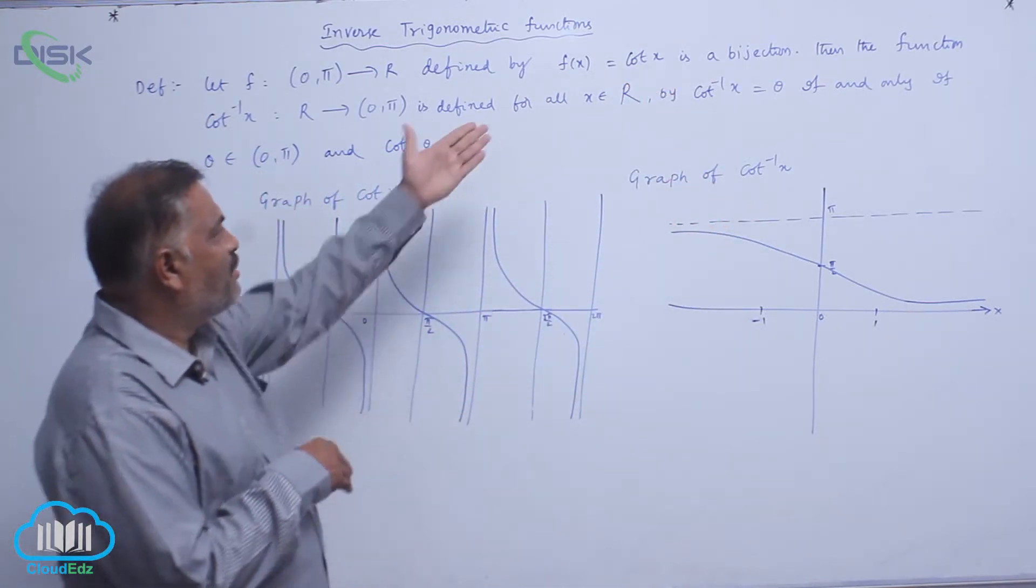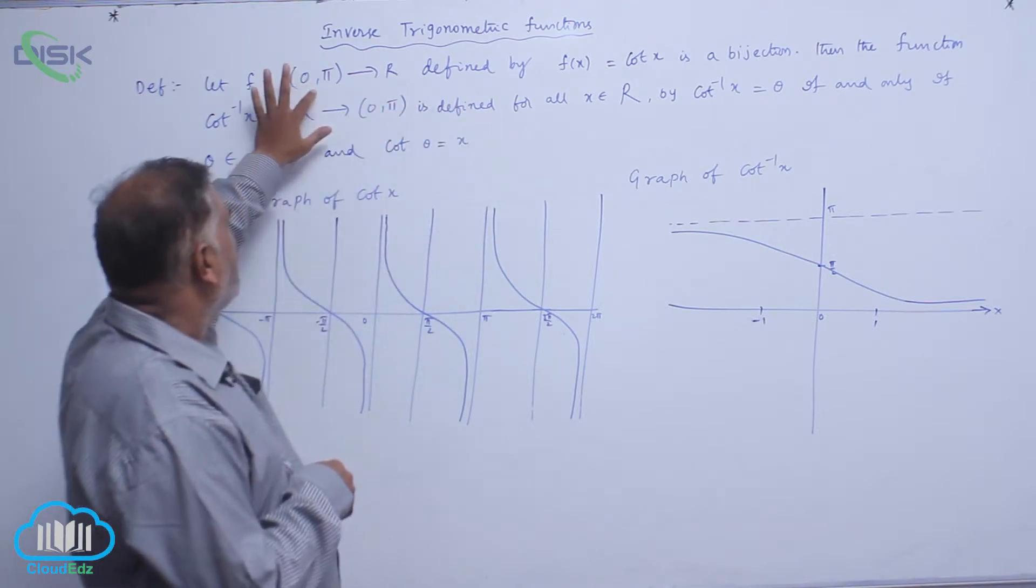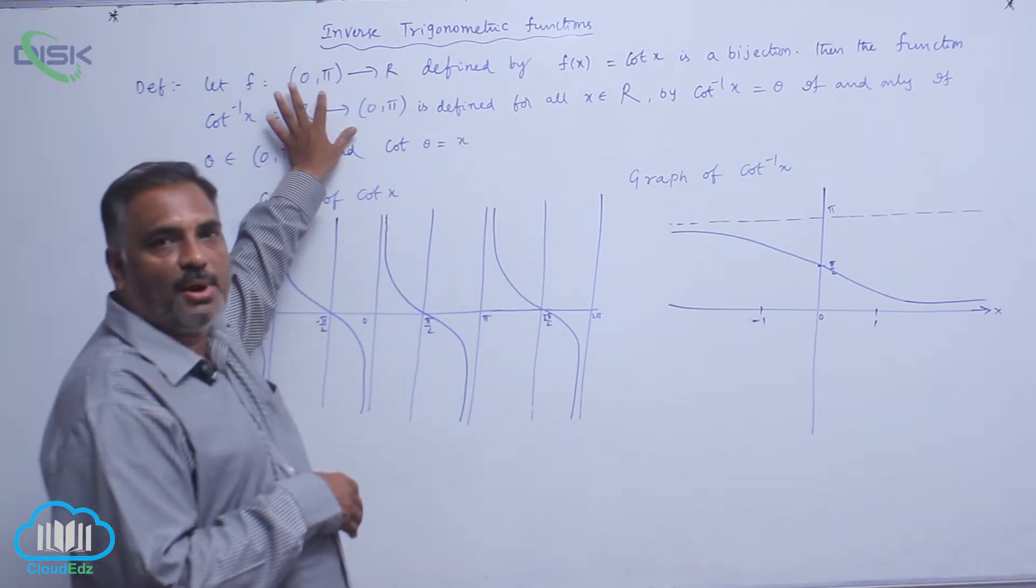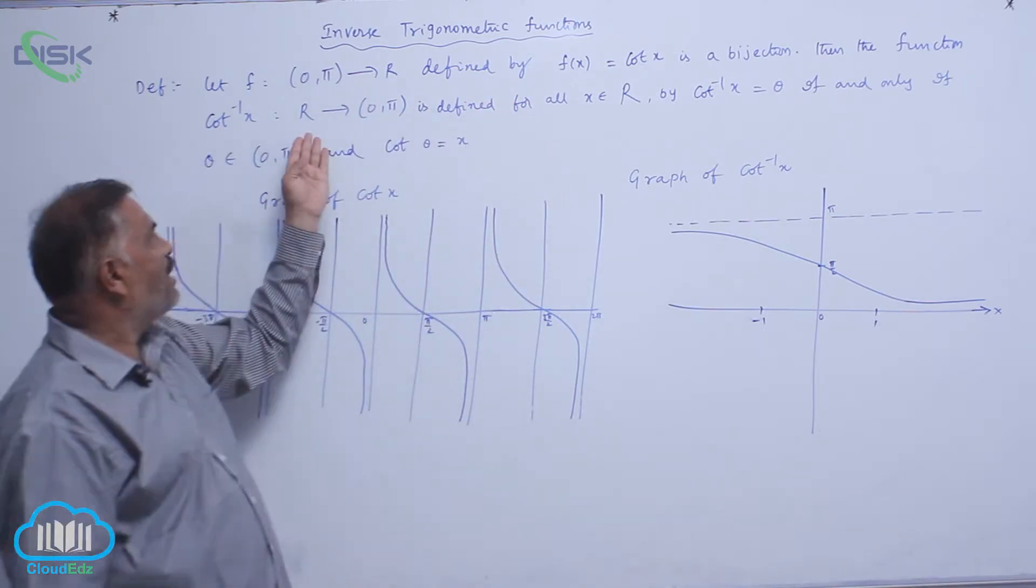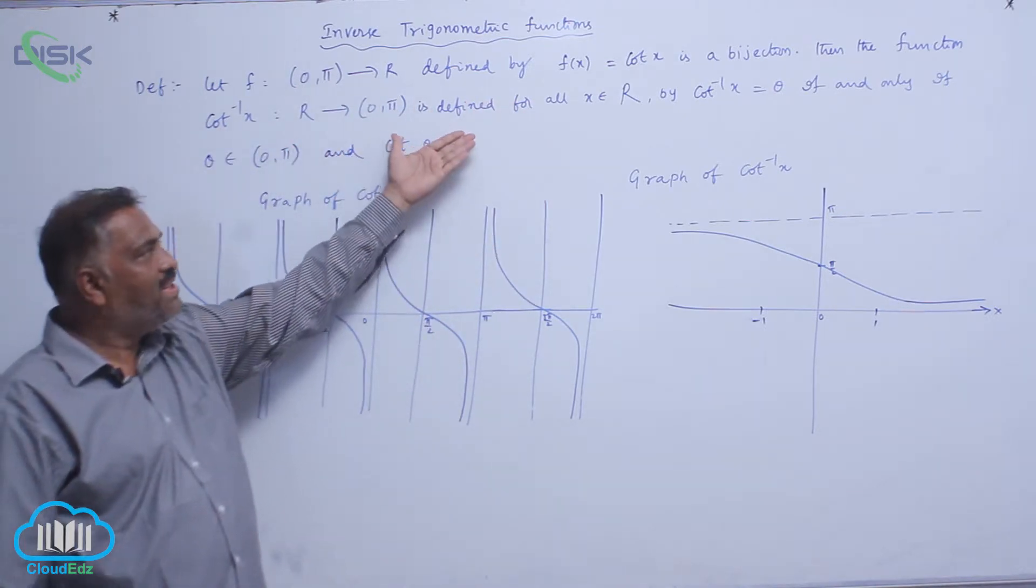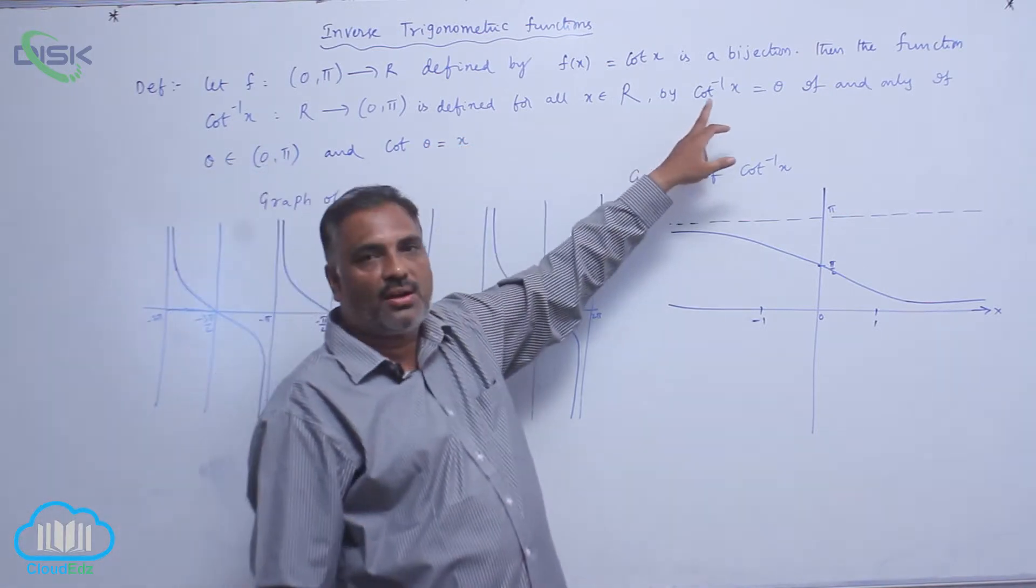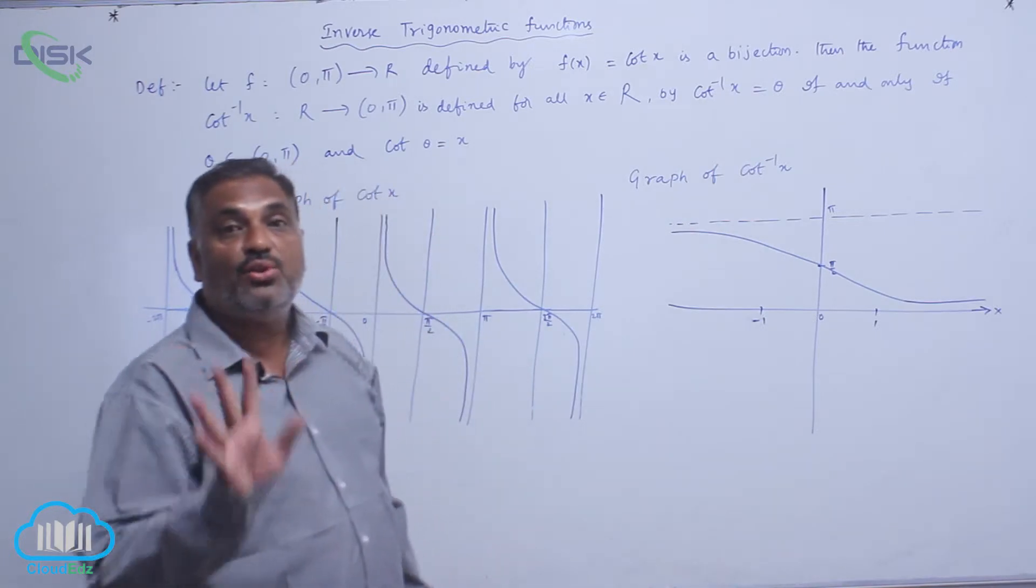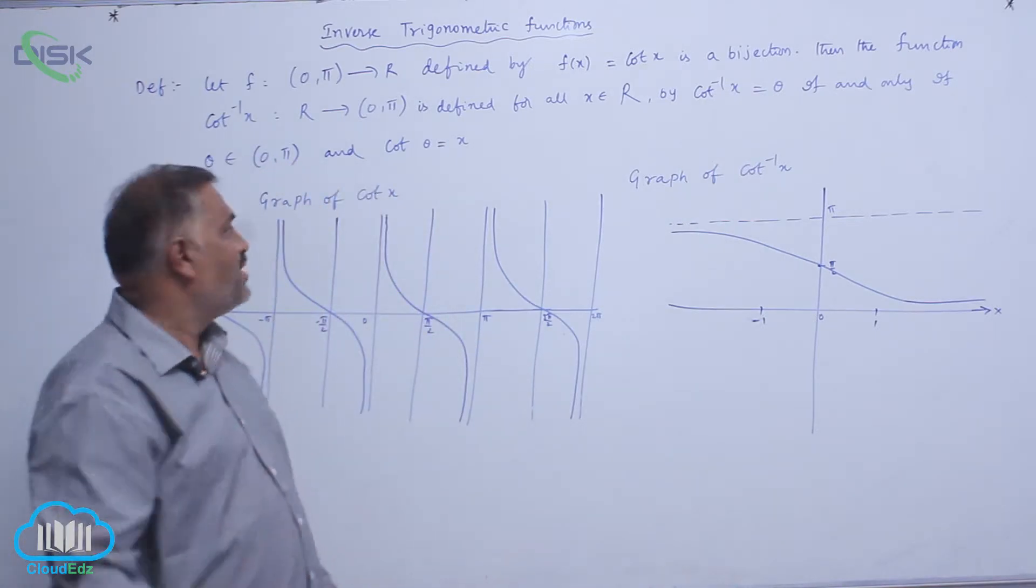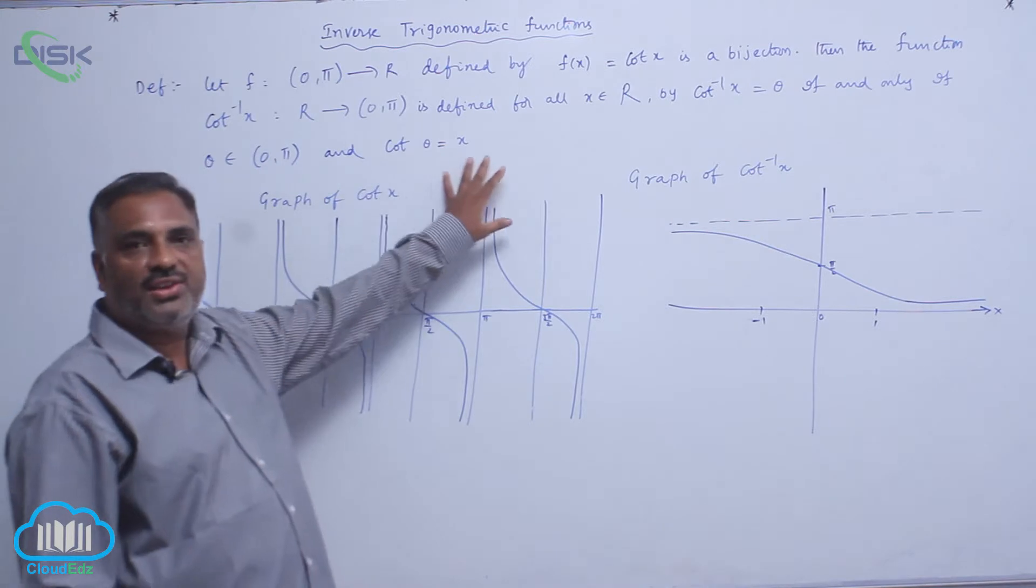We are discussing the bijectiveness of cot x whose bijective domain is (0,π). Then the function cot inverse x: R → (0,π) is defined for all x belongs to R by cot^(-1)(x) = θ if and only if θ belongs to (0,π) and cot θ = x.